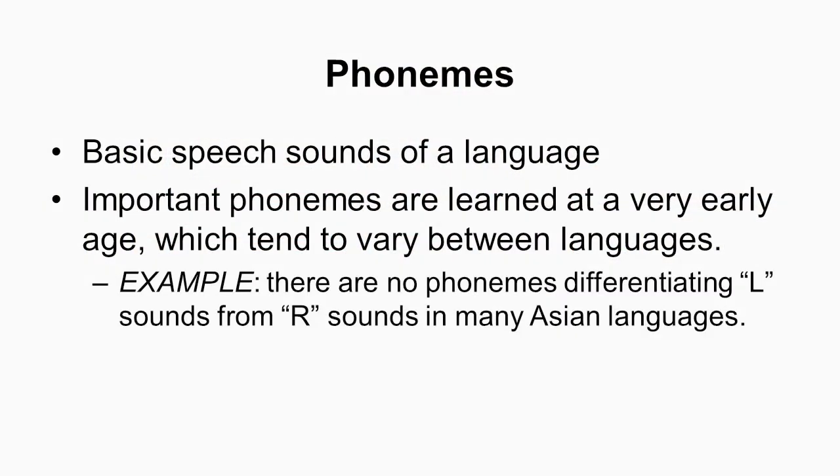Because phonemes come from learning about the language, different languages have different kinds of phonemes. A common example is that many Asian languages don't have phonemes that separate the 'l' sound from the 'r' sound, which is why you sometimes get those stereotypical kinds of mispronunciations.